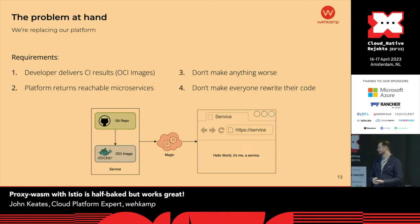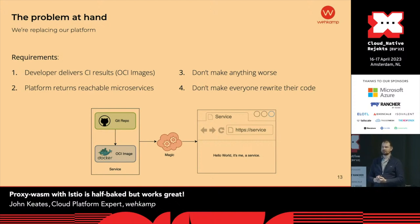The last rule is also very important: don't make everyone rewrite their code. We are not the largest company in the world, but we have about 350 microservices. We can't ask all the teams to make sure all their code works on a new platform as well. That's not something we can ask of them — we don't have the manpower and we don't have the money.